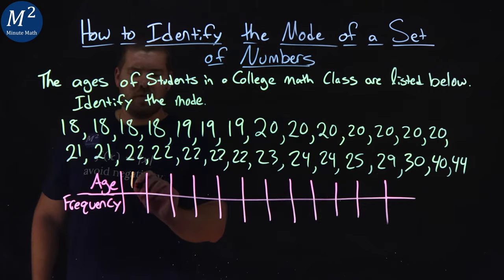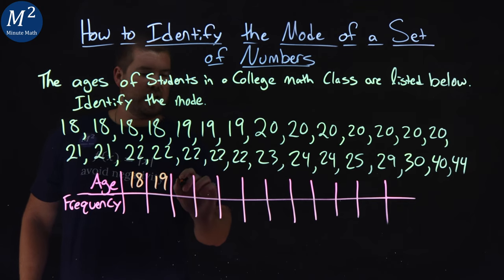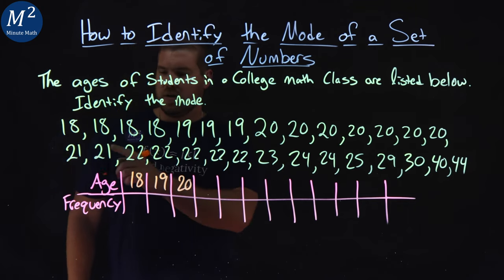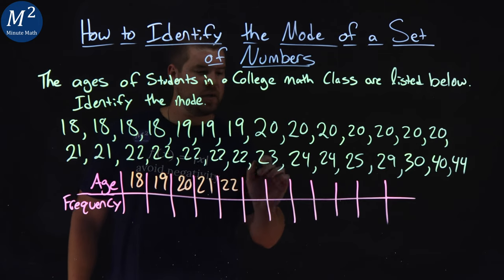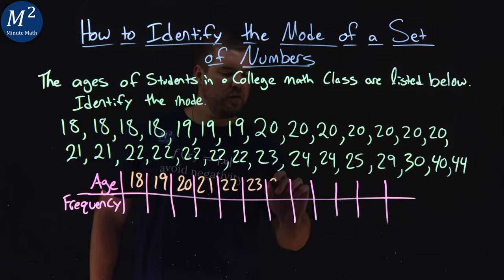So we have an 18, 19, and a 20. 21, 22 occurs. Then we have a 23,